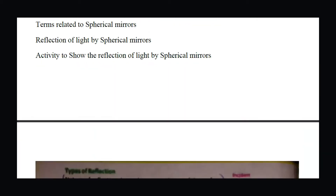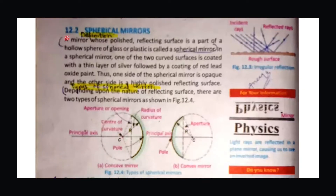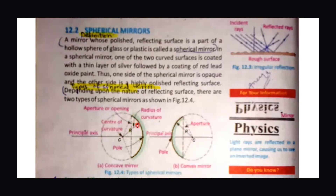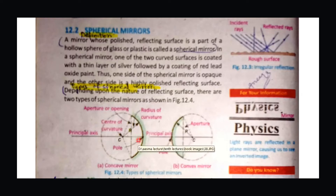Let's define spherical mirrors. We will discuss everything with the help of a diagram. The first two lines of the diagram represent the definition of spherical mirrors. Spherical mirrors are a part of a hollow sphere. We take some parts of a complete hollow sphere, and that part of the hollow sphere is known as a spherical mirror.